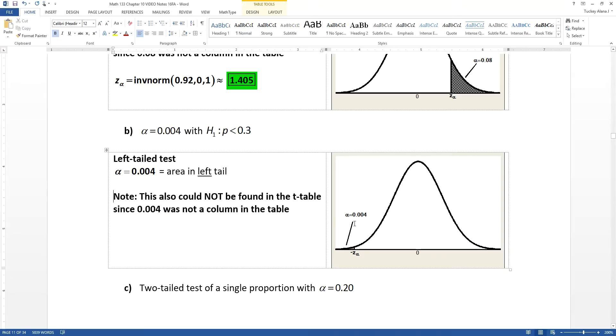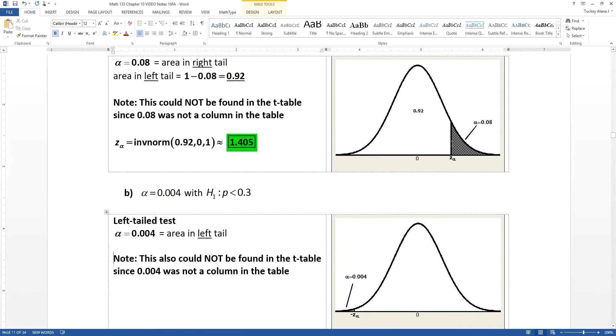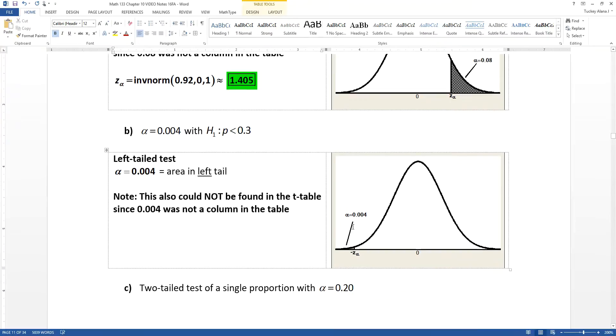So I have a left tailed test picture. I drew an appropriate tail. Notice I'm not shading very much because 0.004 is very small. You should be shading the appropriate amount. When you're drawing and shading these pictures, you should be drawing and shading the appropriate amount. 8% should look roughly like what I have up here. 0.004 should look like what I have down here. When you have 0.004, don't shade half of the picture. That's not appropriate.